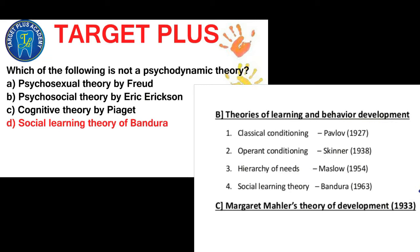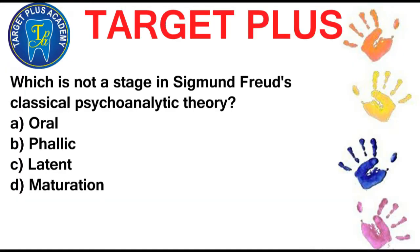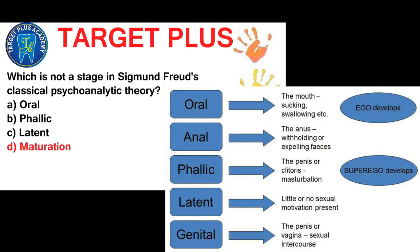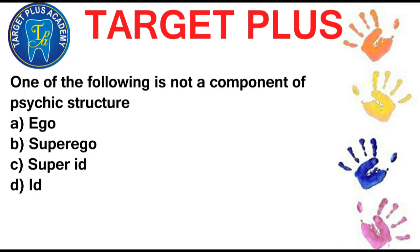Which is not a stage in Sigmund Freud's classical psychoanalytical theory? The answer will be maturation. The stages are oral, anal, phallic, latent, and genital — not maturation. One of the following is not a component of psychic structure. The answer is super ID.